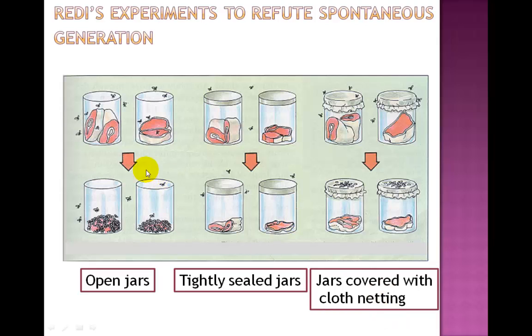He left the first two sets open allowing flies to enter the jar. He tightly sealed the next two sets of jars with lids and he covered the last two sets of jars with a cloth netting. In the controls with the open jars, the flies were able to lay eggs on the rotten meat which then became maggots, whereas in the other two sets of jars, the flies were unable to come in and thus there were no eggs or maggots present on the meat.